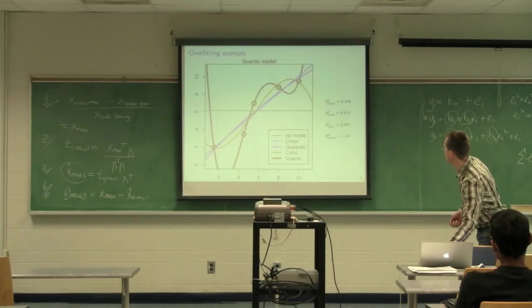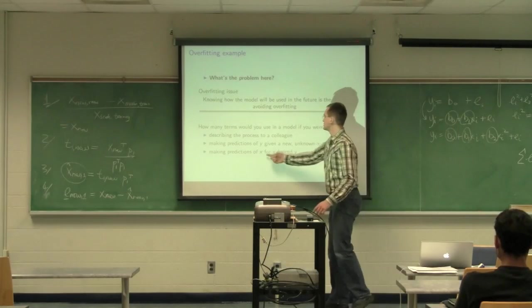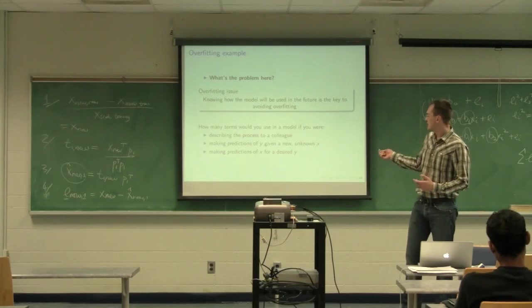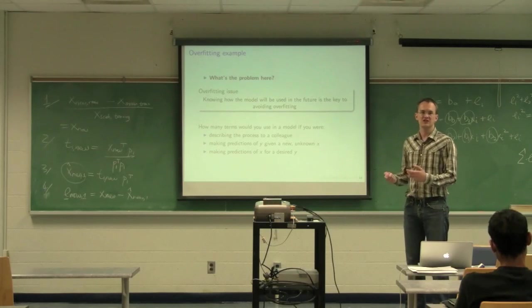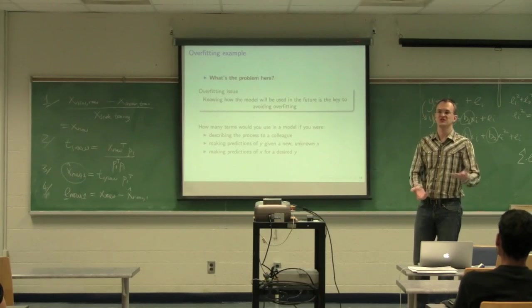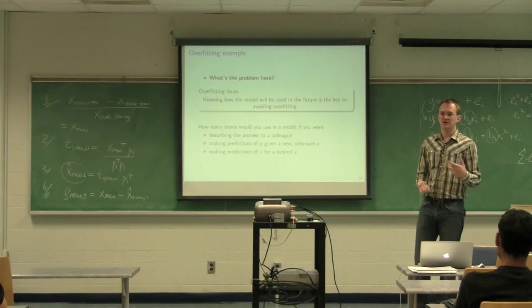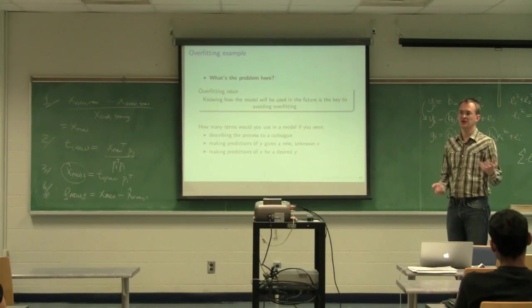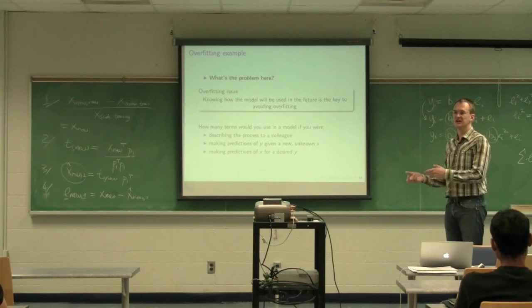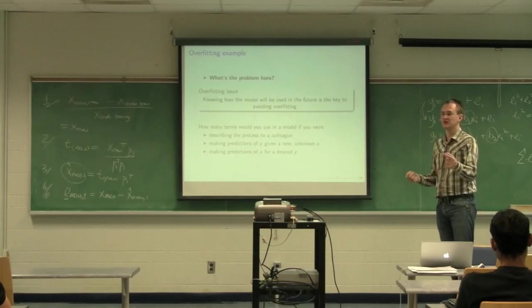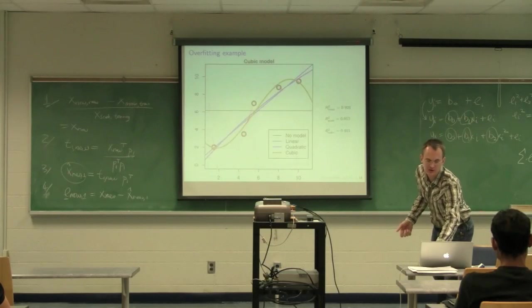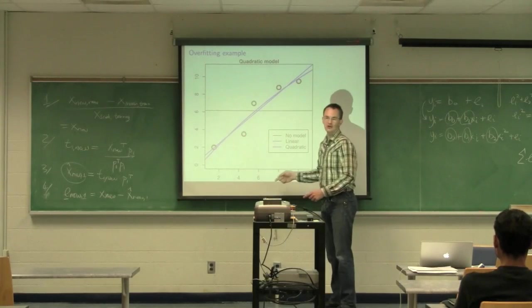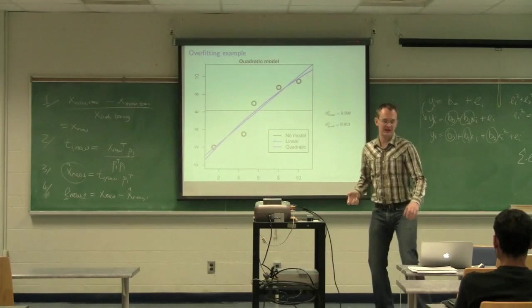The other final case I had over here was quite interesting. If you want to make predictions of x for a desired y, let's say the relationship between x and y is such that y is the output of your process and x is a key input variable. Now someone comes to you and says, I want a product with this particular property y. Can you make it for me? You say, sure I can. Let me go calculate what settings I need to use in my process, the x. So now you're what we're calling inverting the model. You're running the model backwards. For a given y, you go back and you calculate what your x might be. Which model would you use in that case?